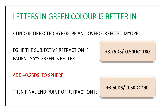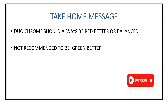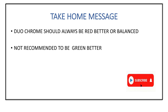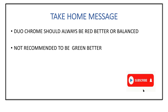For example, if the patient has a refractive error of plus 3.25 with 0.5 cylinder at 90 and says green is better, you add plus 0.25 spherical, making the final endpoint plus 3.5 with 0.5 cylinder at 90. The take-home message is: the Duochrome result should always be red better or balanced — it is not recommended to end on green better. Thanks for watching, and kindly like, share, and subscribe.